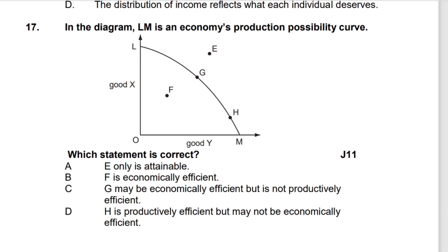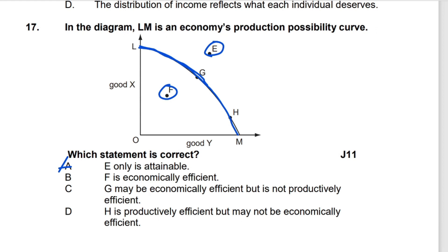In the diagram, LM is an economy's production possibility curve. Which statement is correct? Option A says point E is attainable — E is outside the PPC, beyond the boundary of available resources, so this is incorrect.